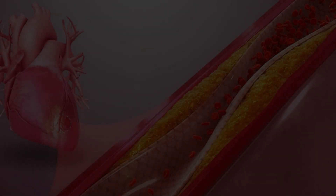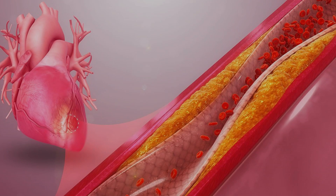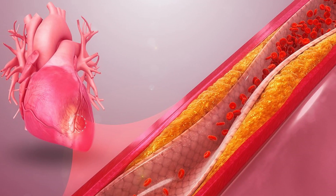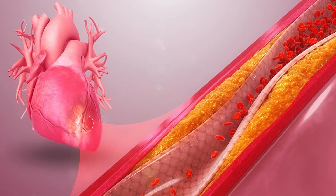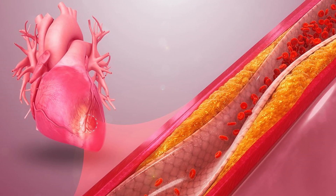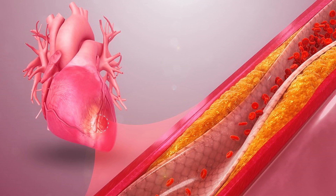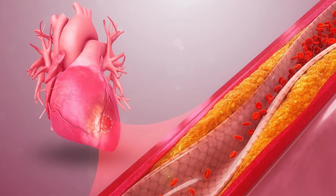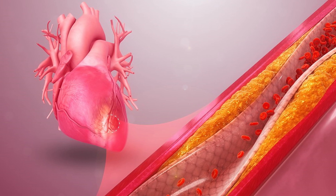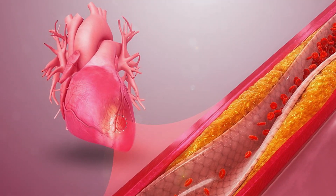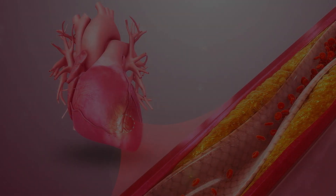The main surgery used for treatment of coronary artery disease is coronary artery bypass grafting, commonly called CABG. During this surgery, doctors use blood vessels from other parts of your body to make a detour around blockages in your coronary arteries.